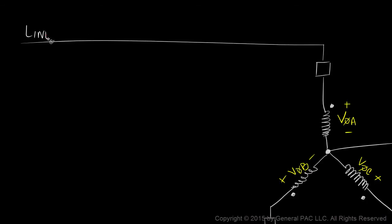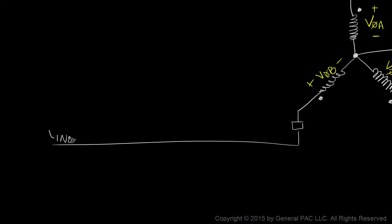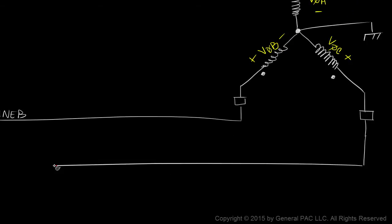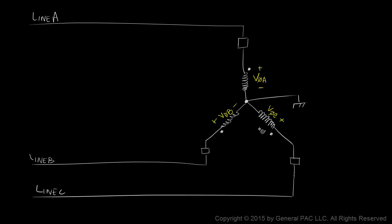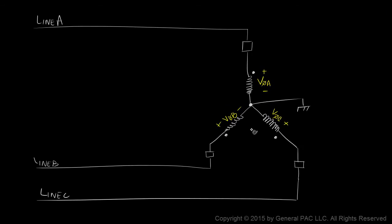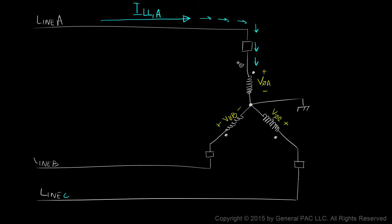Line A, line B, and line C are all connected to their respective bushings. For a Y-connected transformer, we can expect that the line-to-line current and phase current to be equal. This illustration shows very clearly that the line-to-line current for line A flows directly into the polarity side of winding A, so the line-to-line current equals the phase current.